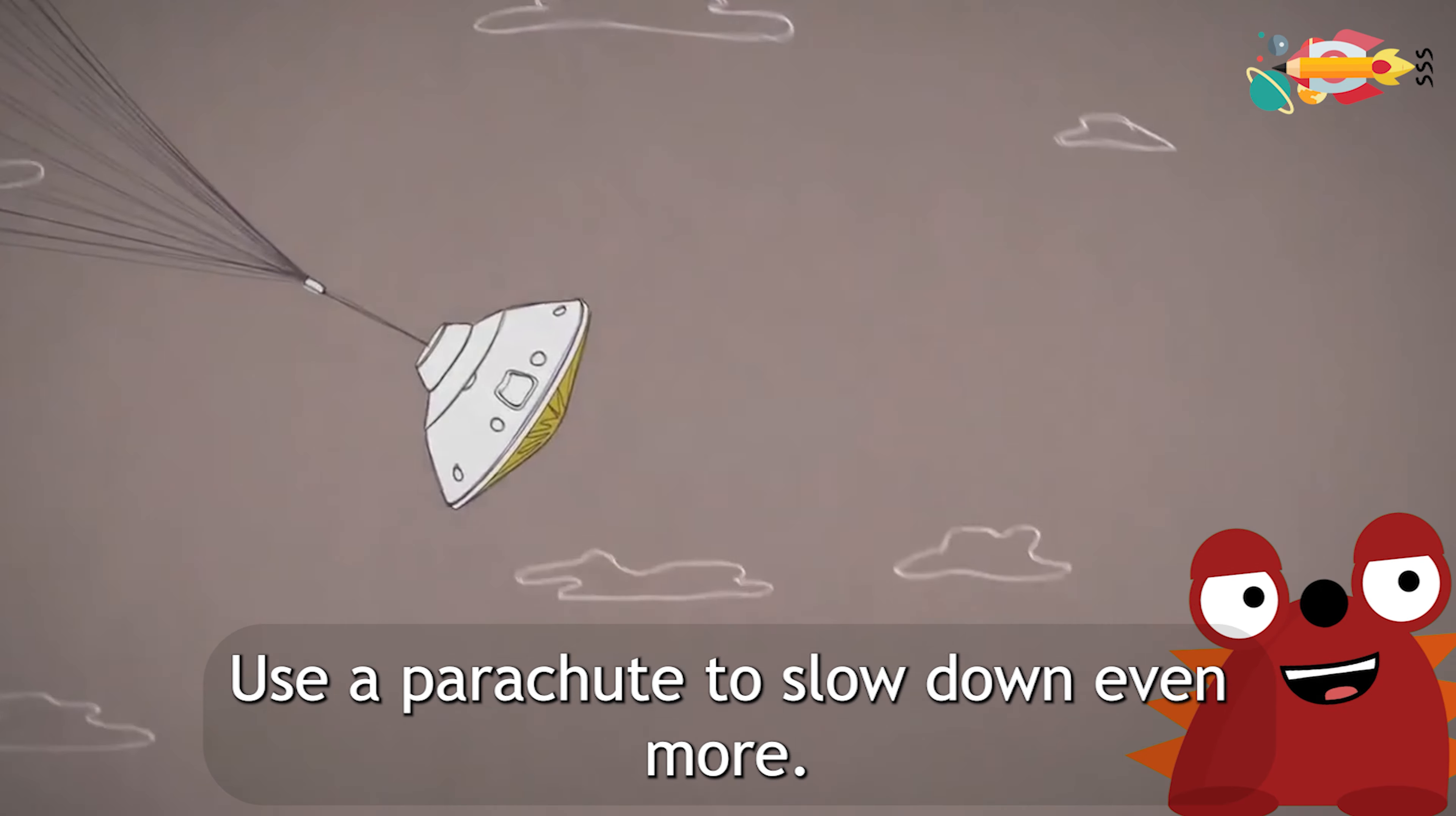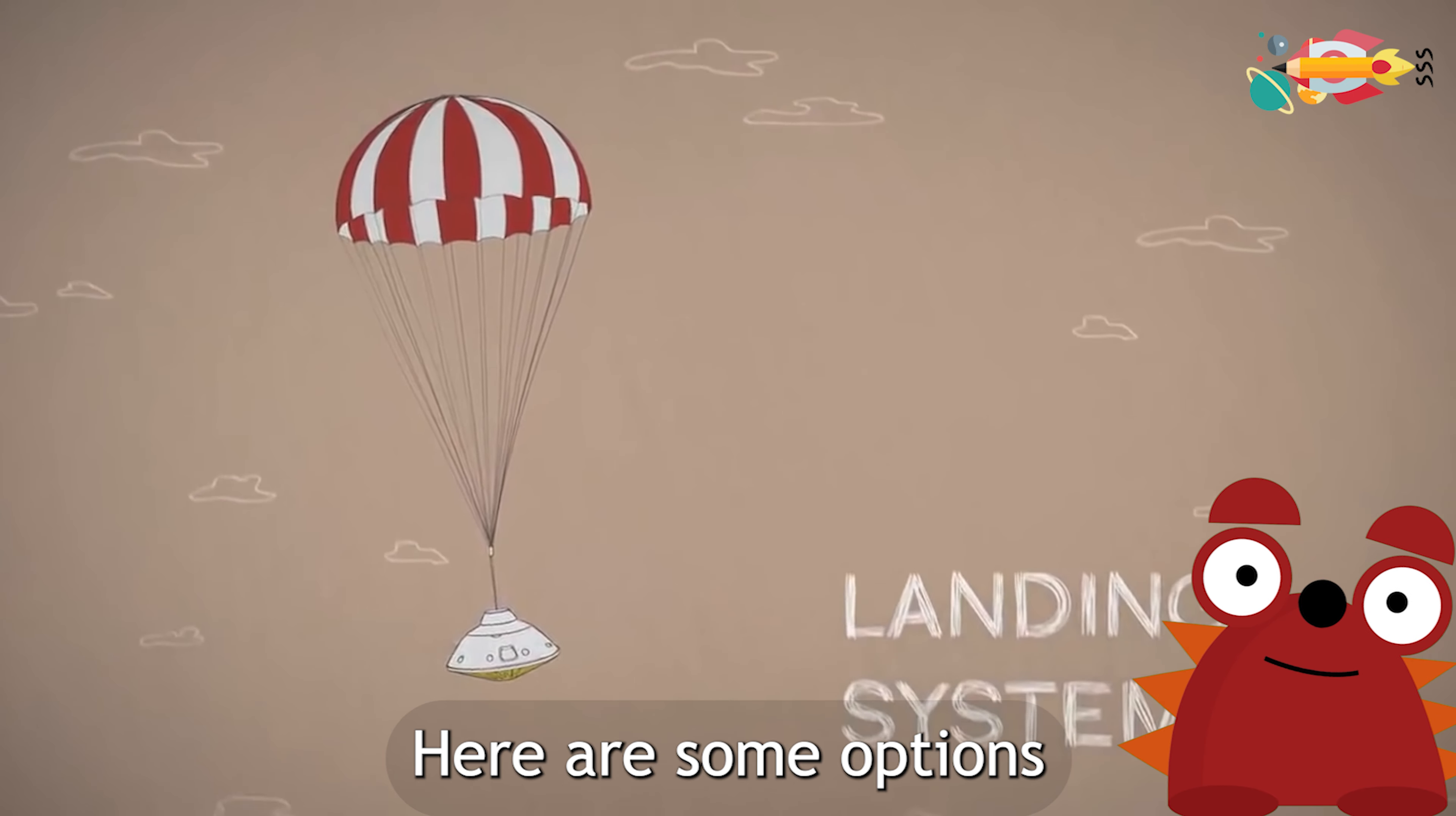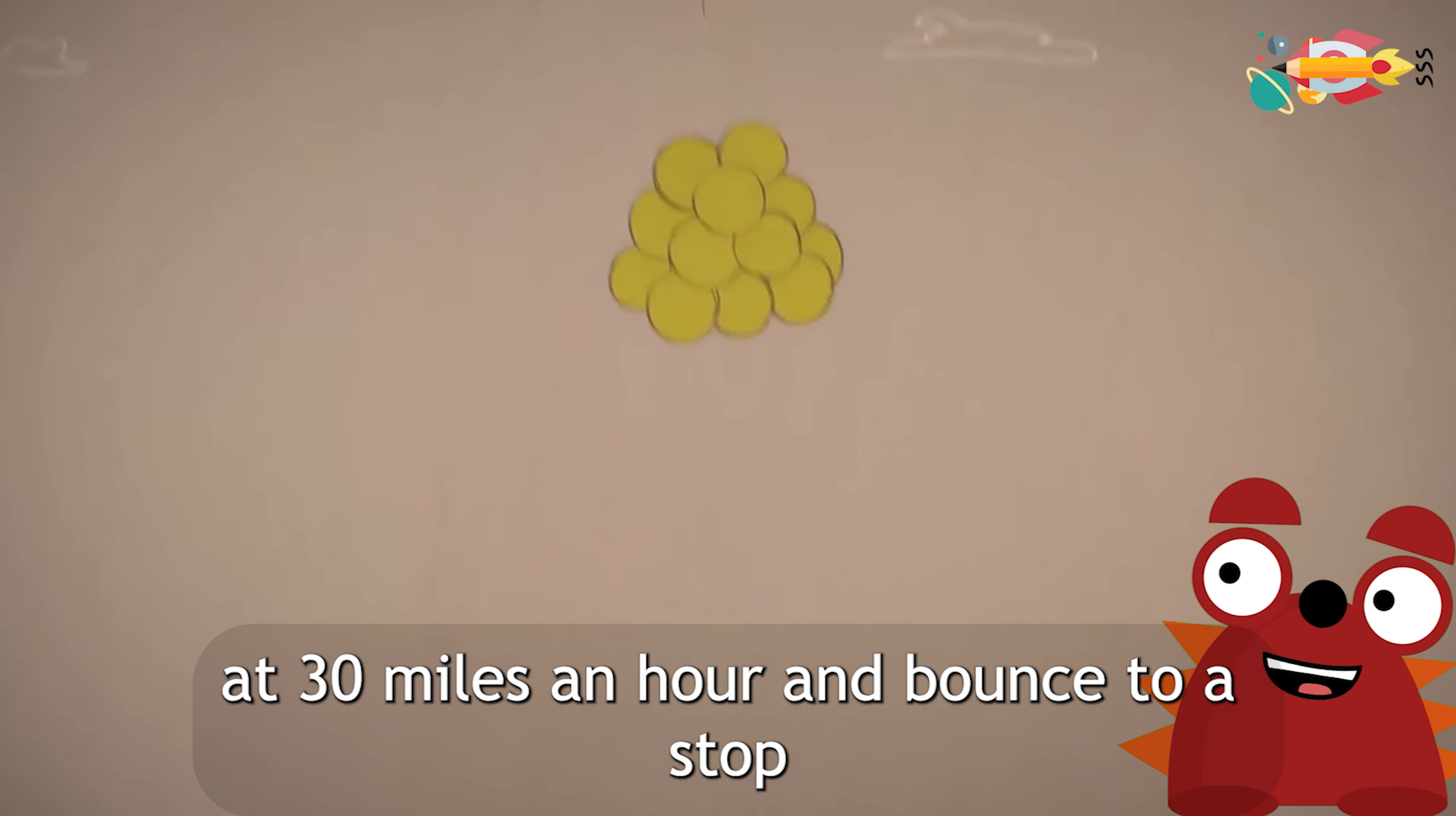Use a parachute to slow down even more. Still, falling at over 100 miles per hour, you need the right system to land safely. Here are some options. With a small to mid-sized rover, use a cushion of airbags along with retro rockets. Impact at 30 miles an hour and bounce to a stop.